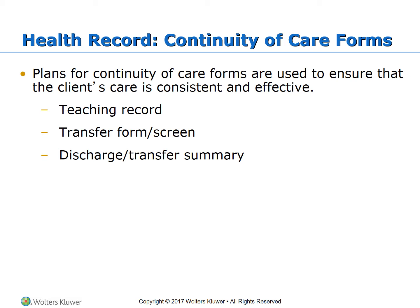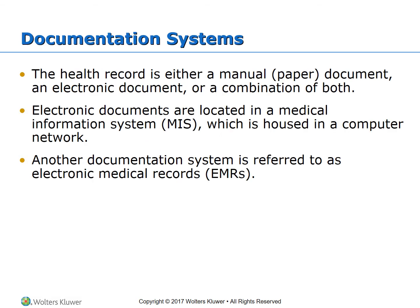Plans for continuity of care forms are used to ensure the client's care is consistent and effective. You have your teaching record, transfer form or screen, or discharge transfer summary. These all contain information that enables other caregivers to ensure continuity of care. The healthcare record is either a manual paper document, an electronic document, or a combination of both.